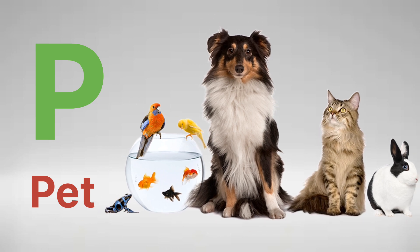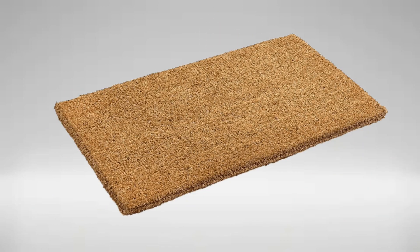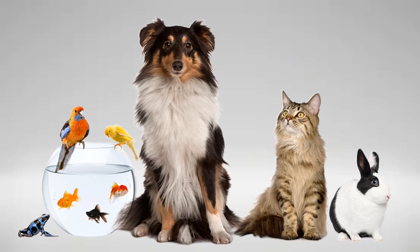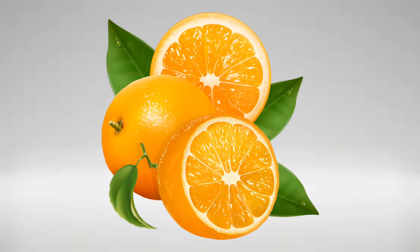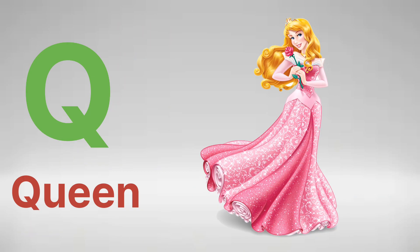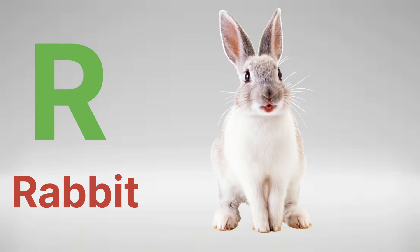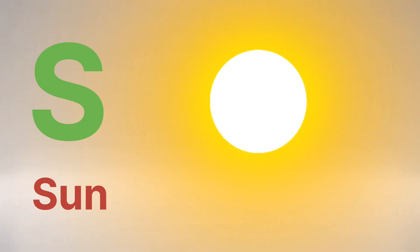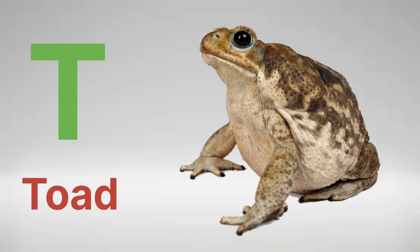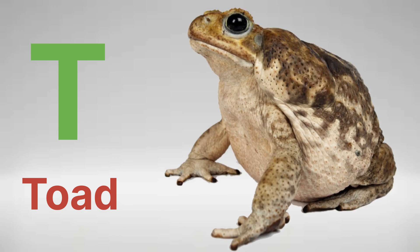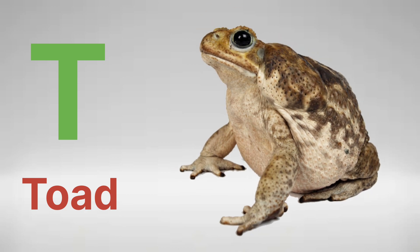P is for Pet. P-P-Pet. Q is for Queen. Q-Q-Queen. R is for Rabbit. R-R-Rabbit. S is for Sun. S-S-Sun. T is for Toad. T-T-Toad.